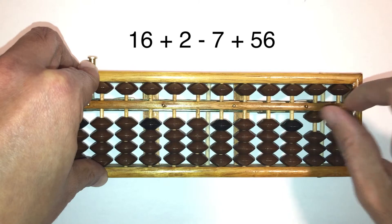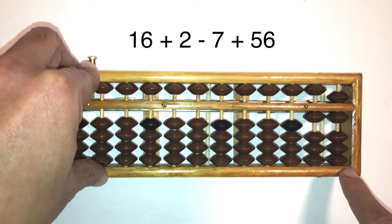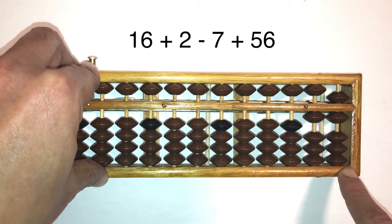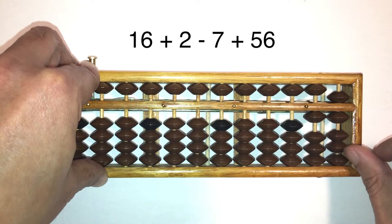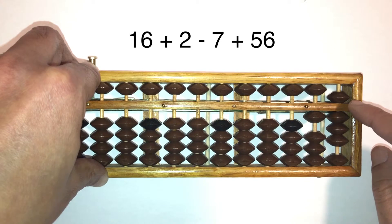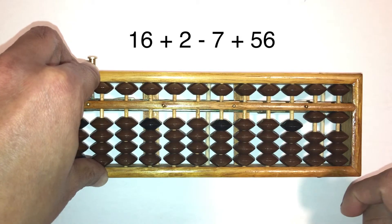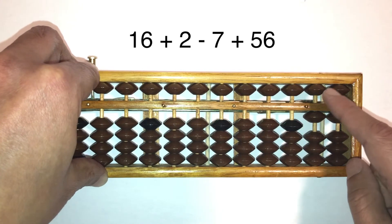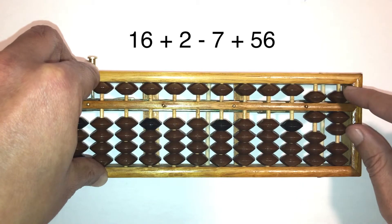Here we go. So 16, it's 10 and 6. Plus 2, add 2 with your thumb. Take away 7, minus 7, minus 5, minus 2. Plus 56, add the 50 and pinch the 6 together.